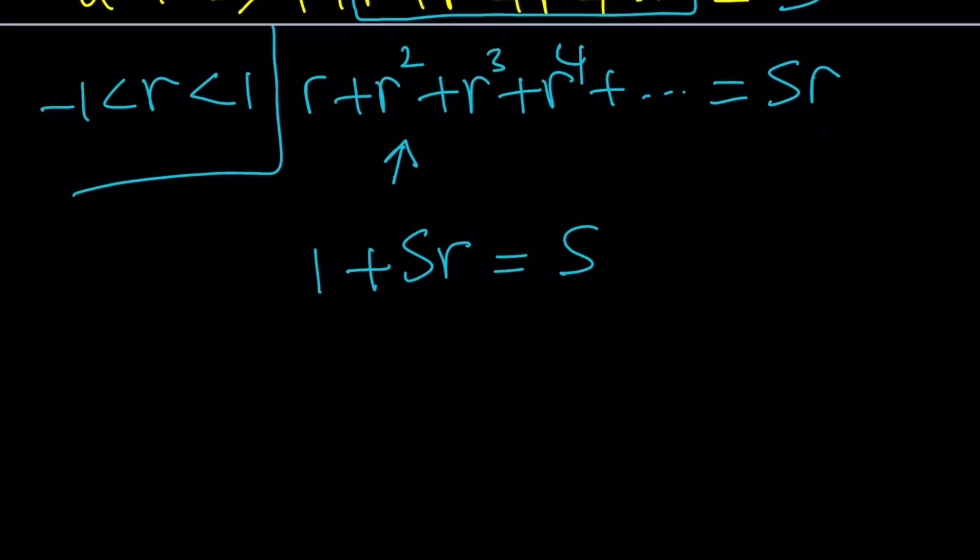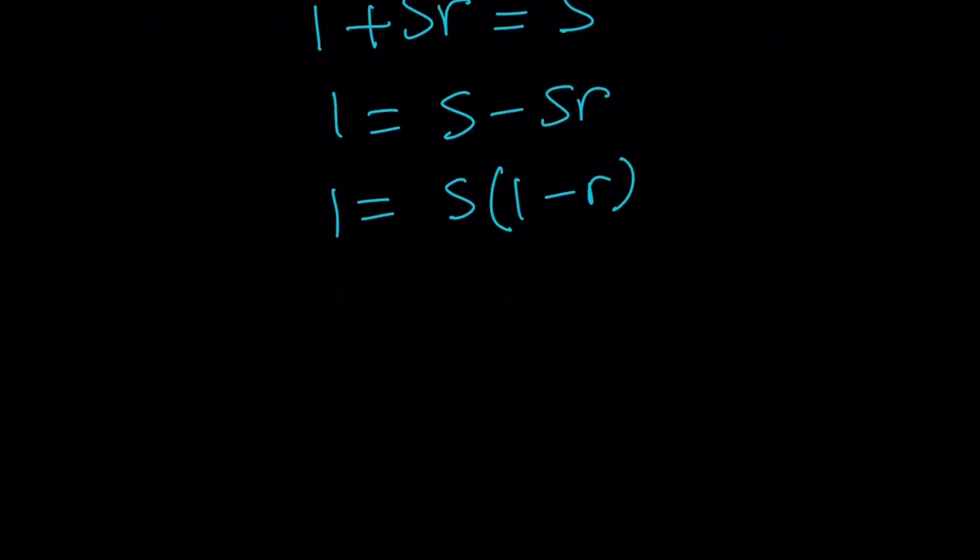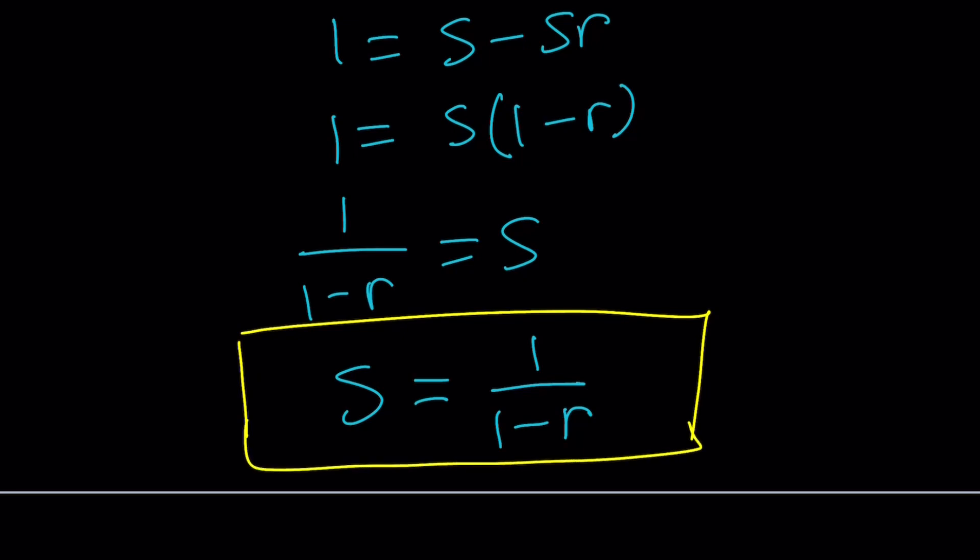Put everything that contains S on the same side. 1 equals S minus SR. And then factor out an S. You're going to get 1 minus R. If you divide both sides by 1 minus R, you get S. 1 over 1 minus R equals S. But we like to write S on the left-hand side. So, S can be written as 1 over 1 minus R.